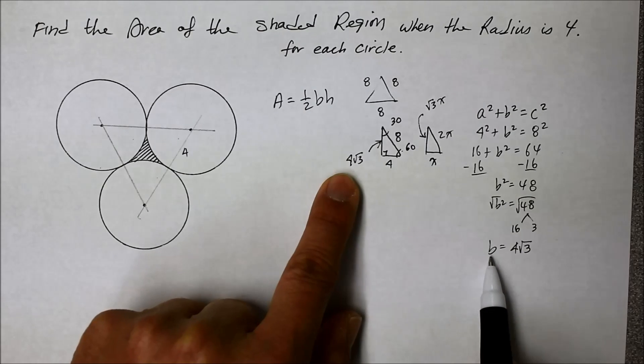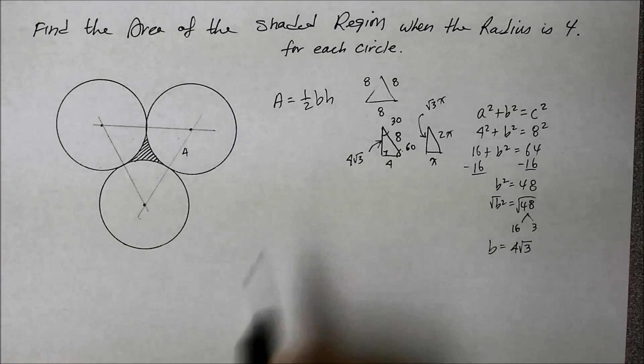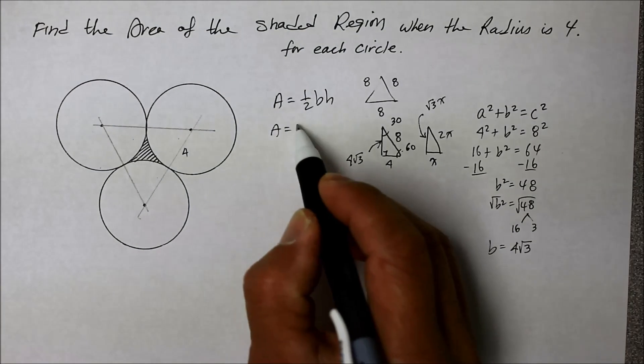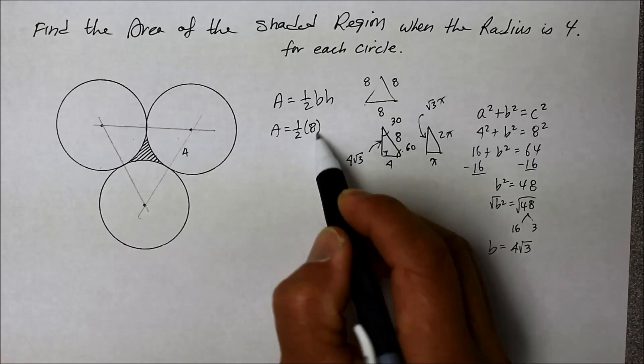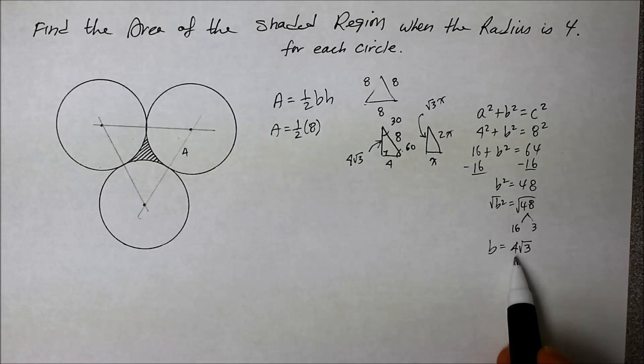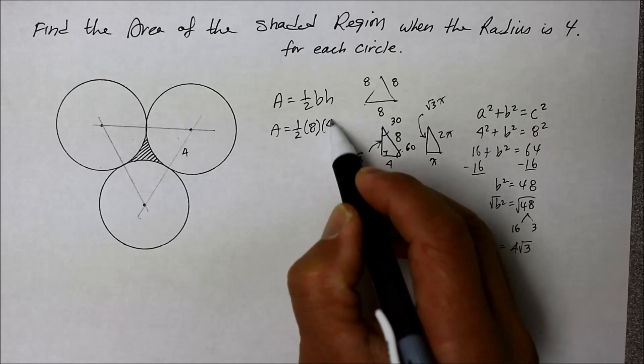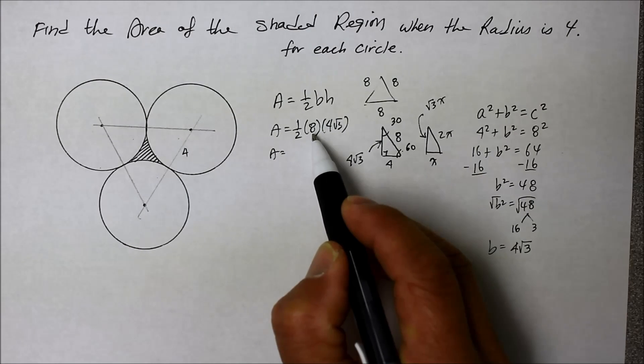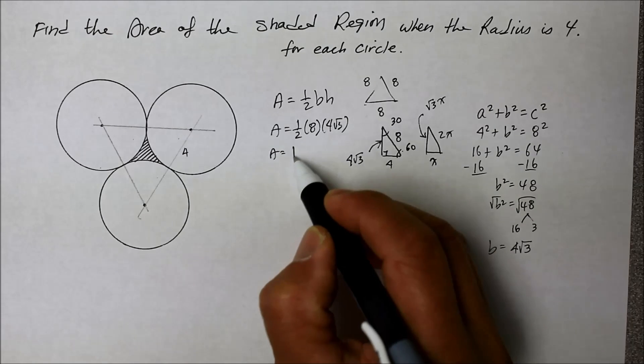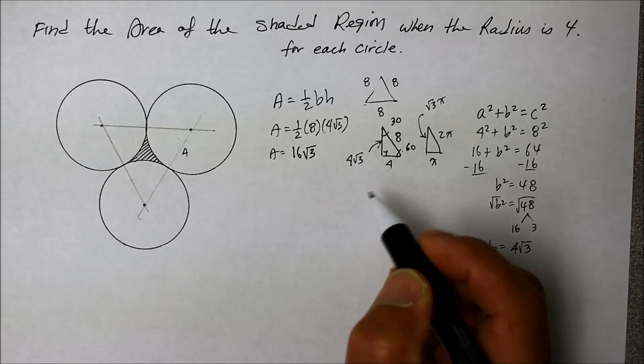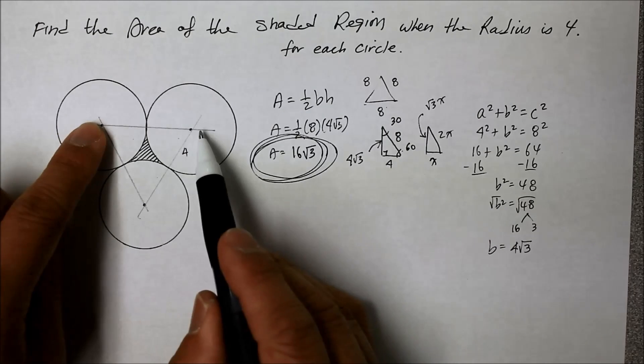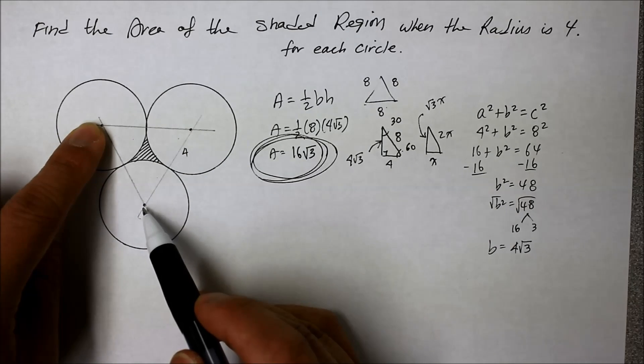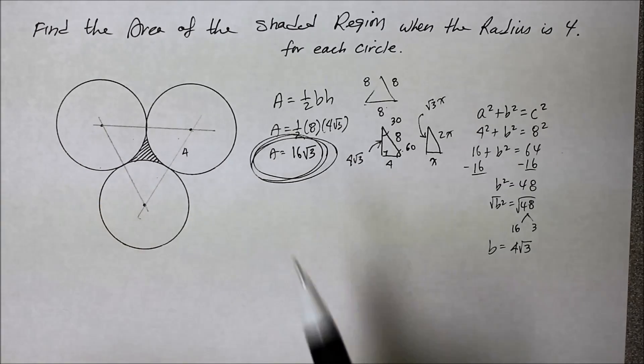But we found that by using the 30, 60, 90 ratio. There it is. So the area of a triangle is a is equal to 1 half times base is 8, and the height is that b, which is 4 square root of 3. 2 reduces the 8 4 times, and 4 times the coefficient 4 is 16.